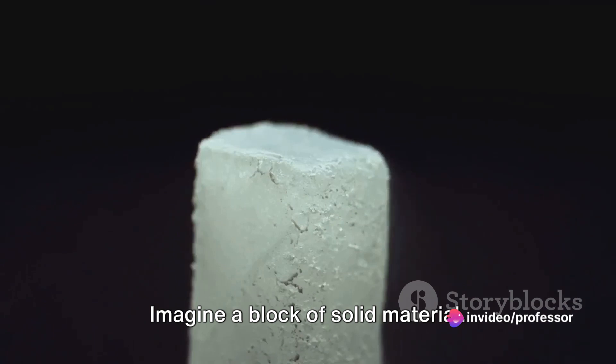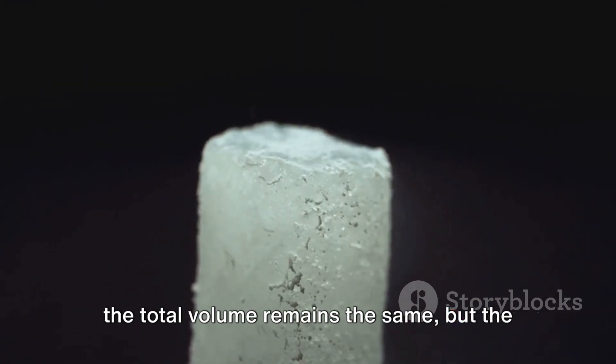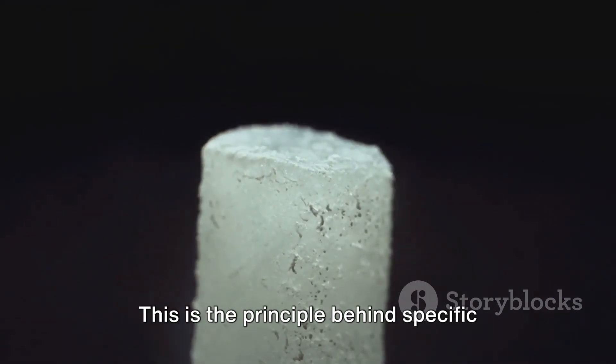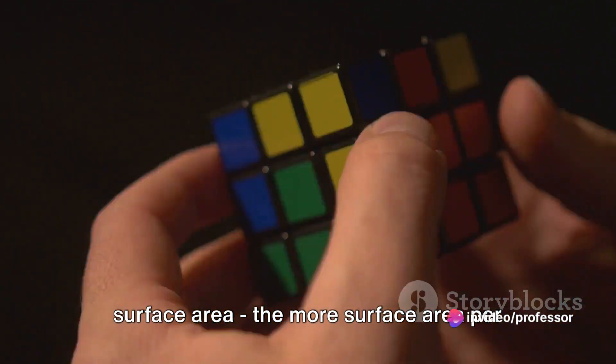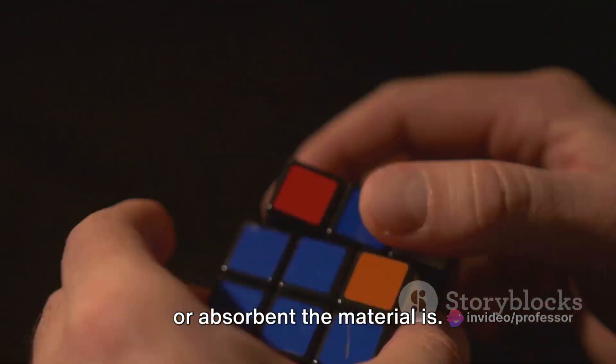Imagine a block of solid material. If you break it down into smaller pieces, the total volume remains the same, but the surface area increases. This is the principle behind specific surface area. The more surface area per unit of mass or volume, the more reactive or absorbent the material is.